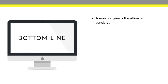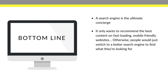The bottom line is that a search engine is the ultimate concierge — they want to recommend only the best content on a fast-loading, mobile-friendly site. If they don't, people will just start using a different search engine. That's exactly what happened to Yahoo — Google rose to the scene, was better, and everyone switched. So Google is trying to avoid that at all costs. Your blog has to be the best possible answer if you want to show up when someone's searching for a specific keyword.